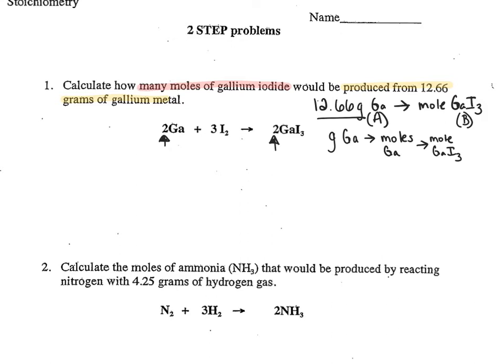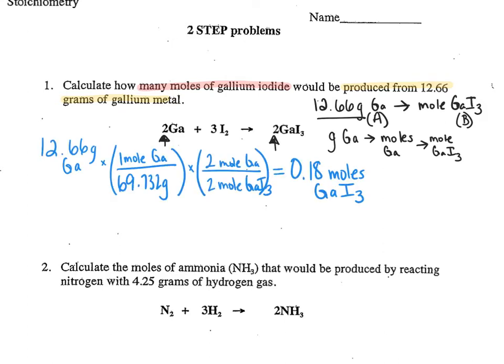Go ahead and pause it — see if you can lay that out. If you're totally stuck, then continue on. Here's what your work should look like: I first start with my grams of gallium, then in the step I'm outlining in yellow, I convert to my moles of gallium. Then in the second step, I use my mole-to-mole ratio from my coefficients, and that gets me to my answer.